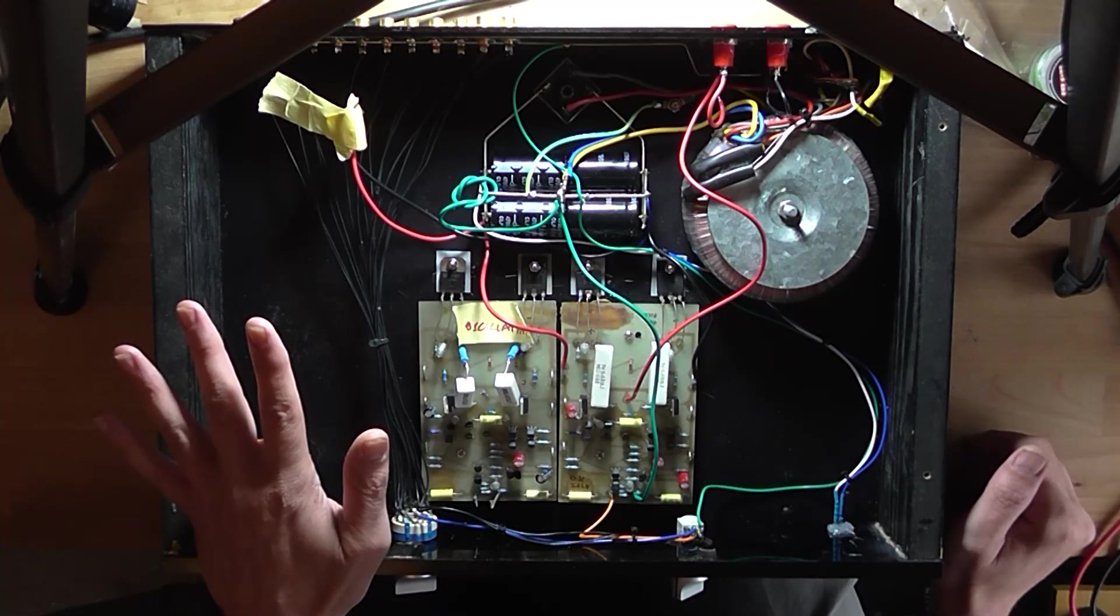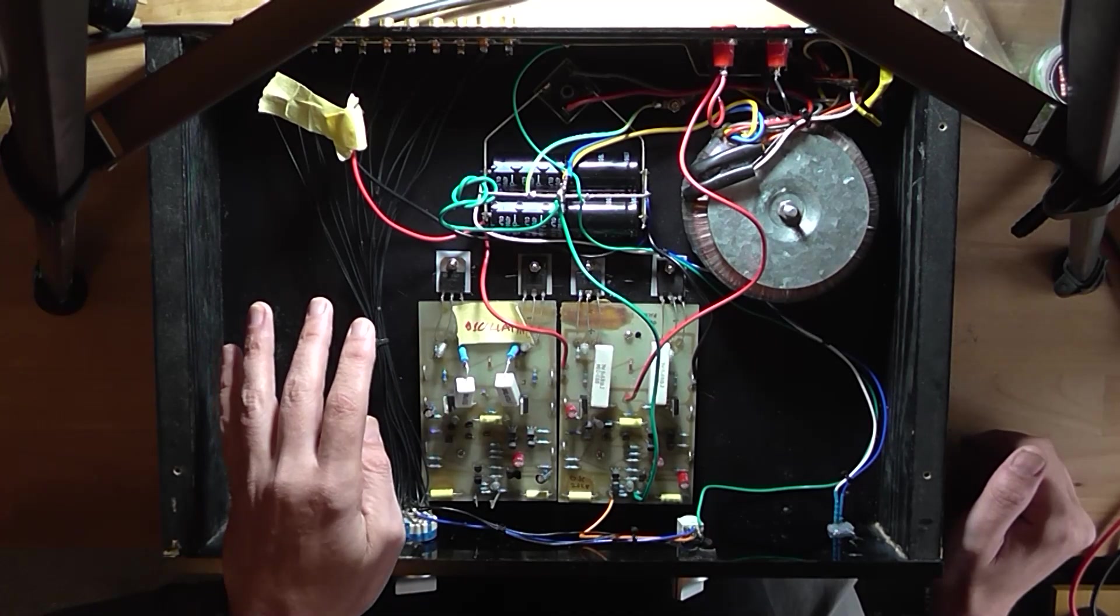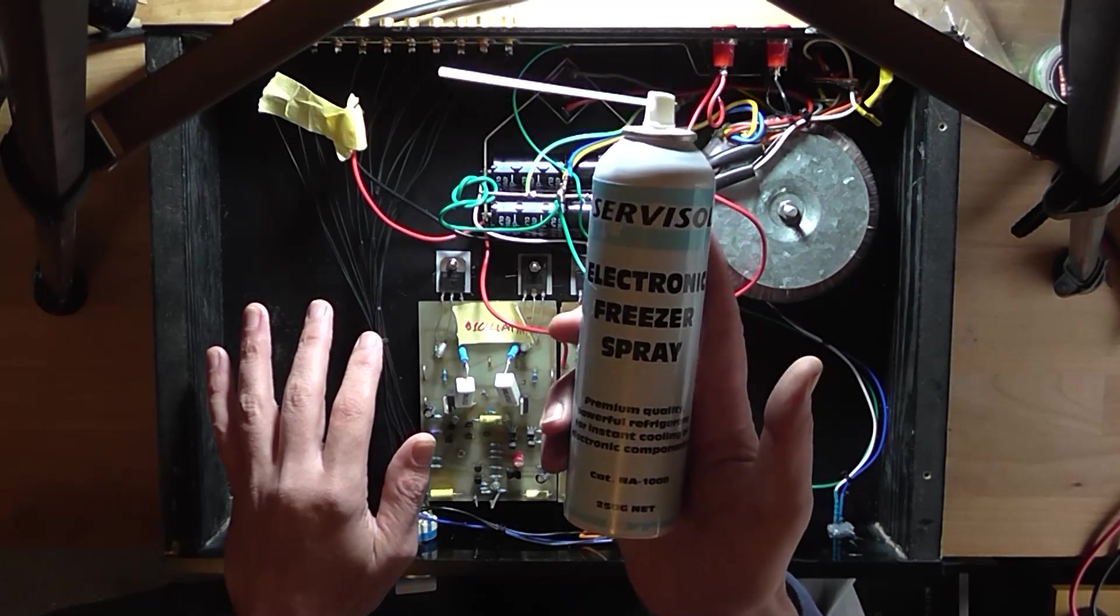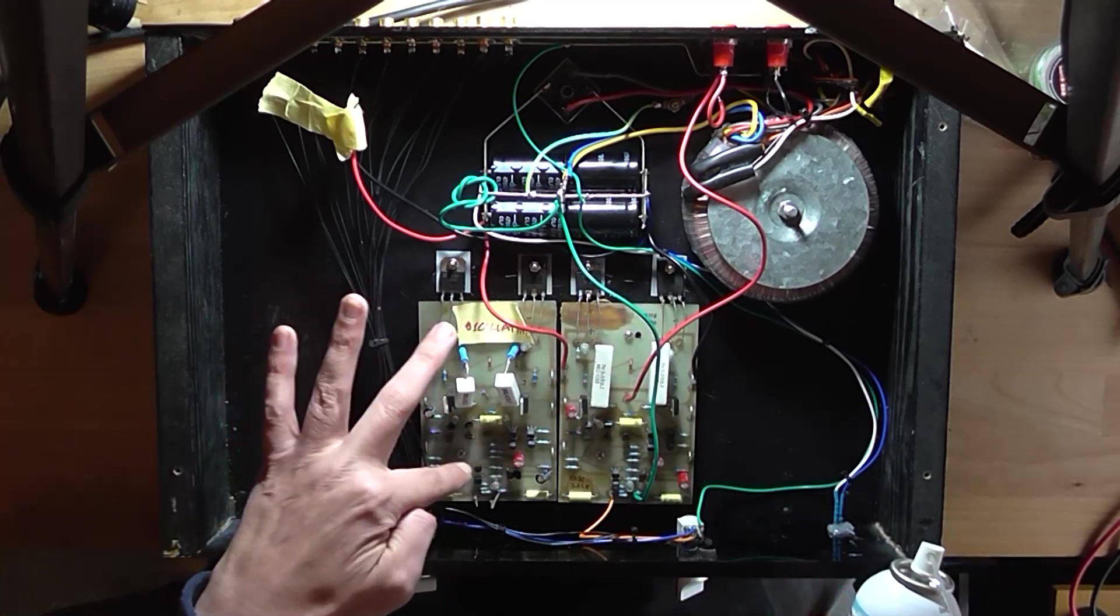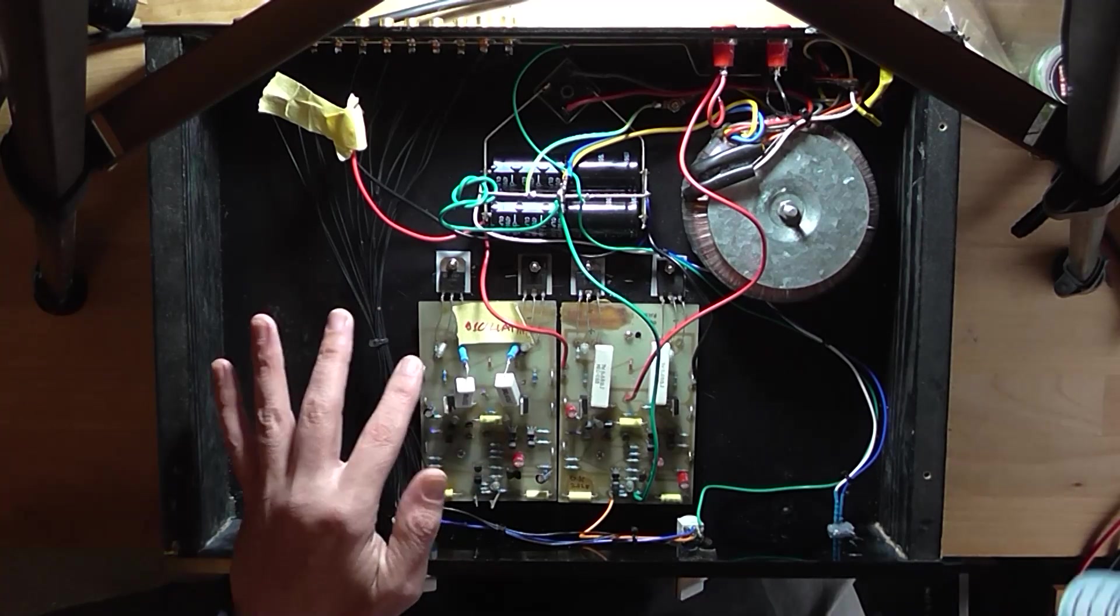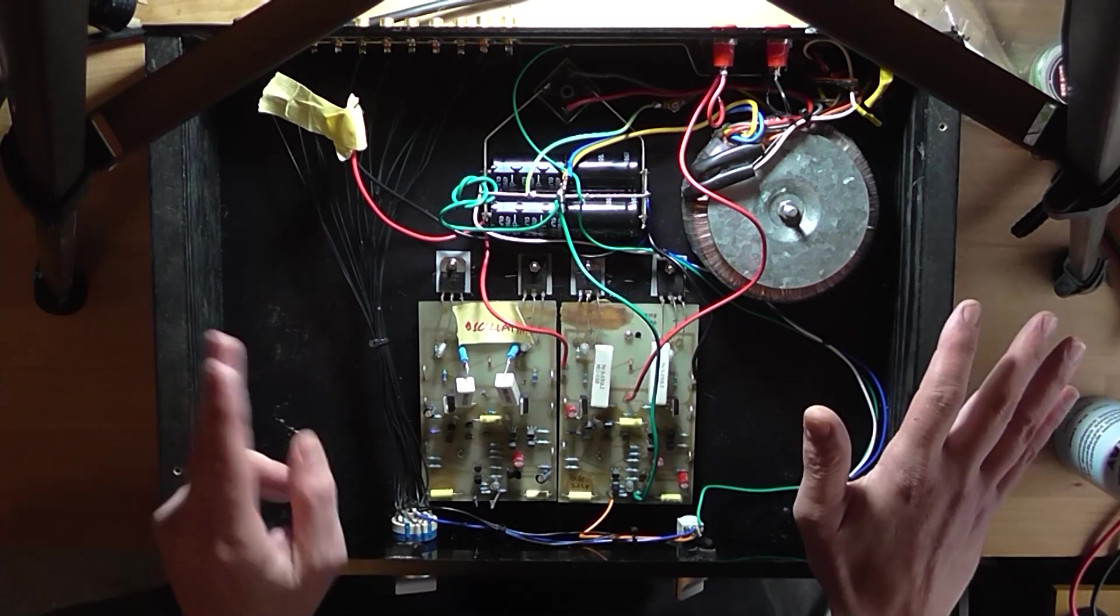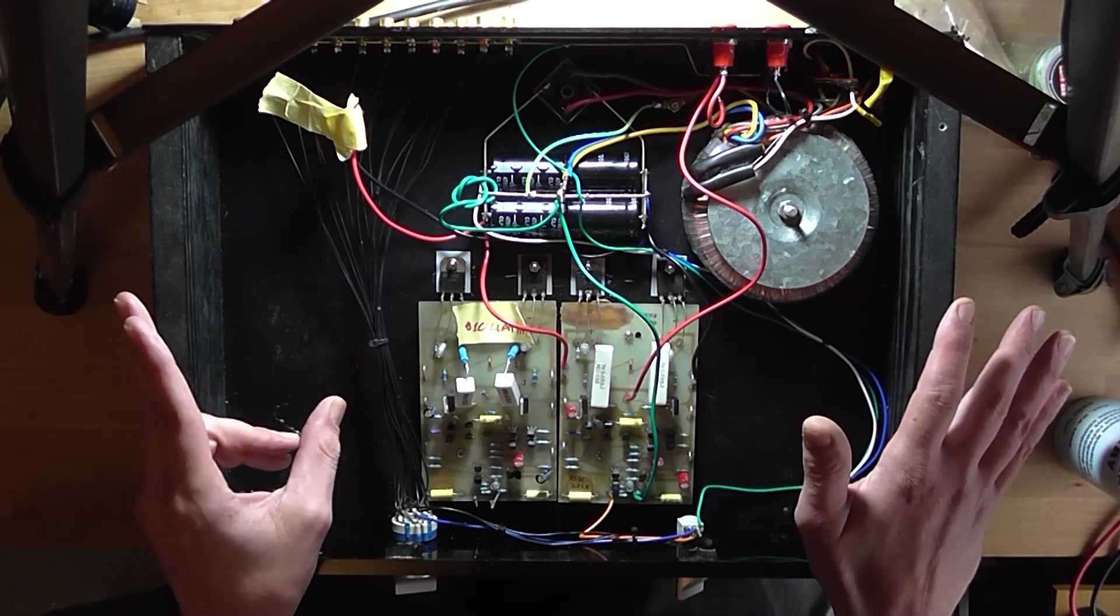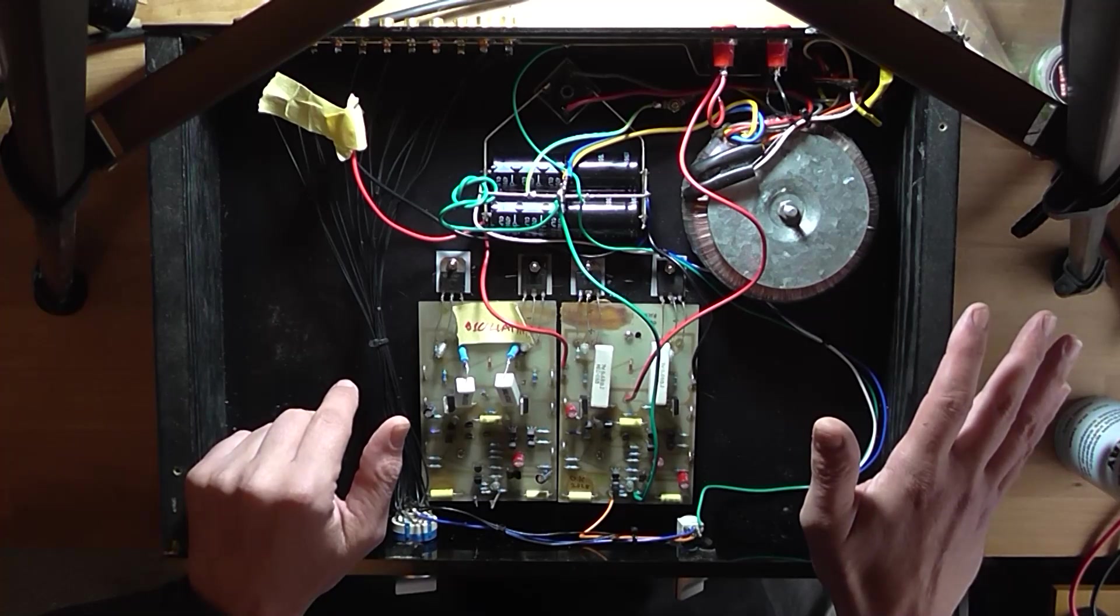So what we need to figure out is why is this oscillating? Someone in the comments of the previous video said to get myself a can of freezer spray, which I've got here, and just go around and freeze some of the components like capacitors or transistors to see if we can pinpoint where the oscillation is coming from.